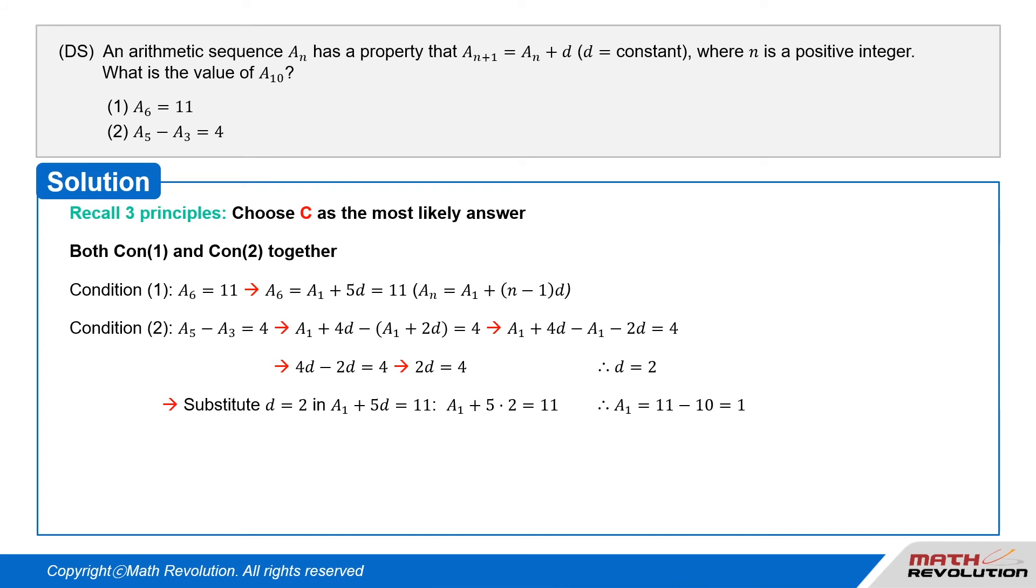We substitute d = 2 in a_1 + 5d = 11. Then a_1 + 10 = 11, so a_1 = 1.